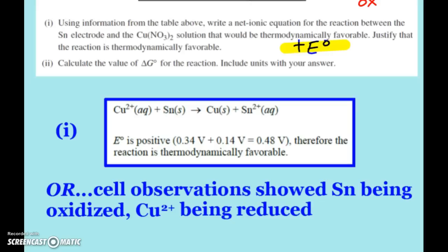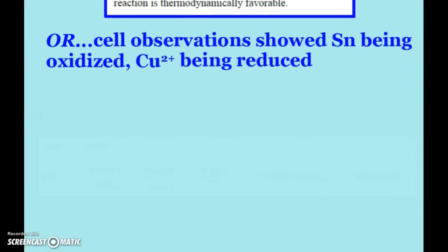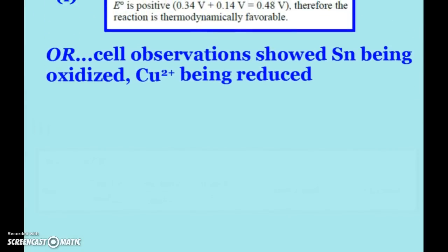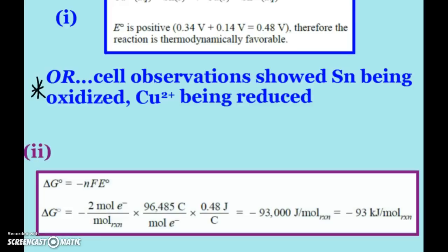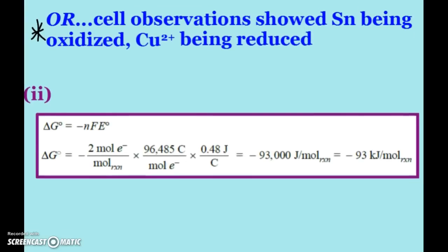So delta G, if you remember, is negative NF E naught. So if you just calculated E naught and you got your 0.48 volts, fantastic. If you chose this way to answer, then now you would have to calculate E naught. Big thing here, again, always choose the proper N. This wasn't so bad because they were both plus two. So we have two moles of electrons, Faraday's constant, and our E naught value.